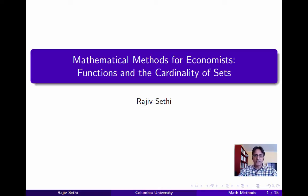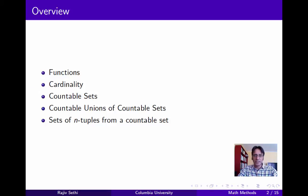In the last segment we talked about relations and ordered sets, and we'll now build on this by talking about functions and the cardinality or size of sets. We'll start by defining functions and cardinality, then discuss a special class of sets called countable sets, and we'll end by proving two results: first that the countable union of countable sets is itself countable, and second that the set of n-tuples from a countable set is countable.